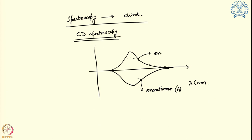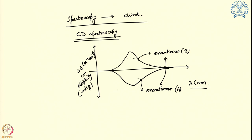If enantiomer A and enantiomer B are enantiomers of each other, these two will show CD spectroscopy curves where the x-axis is wavelength and the y-axis is delta epsilon (mol⁻¹ cm⁻¹) or ellipticity given in millidegrees. From this we can determine whether the molecule is chiral or not by CD spectroscopy. If you get a signature in the CD spectroscopy, you can say the molecule is optically active.